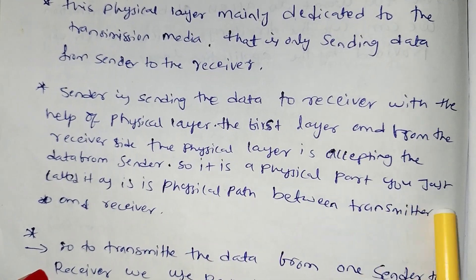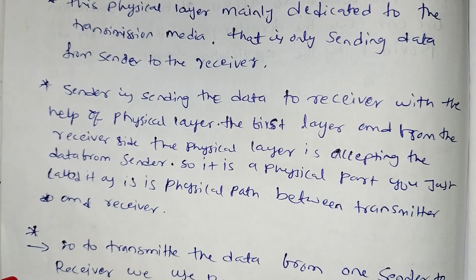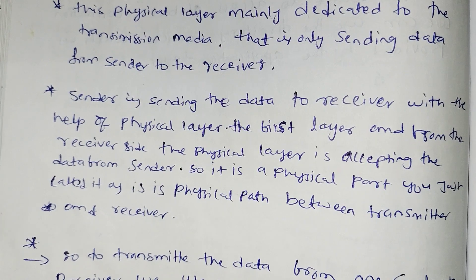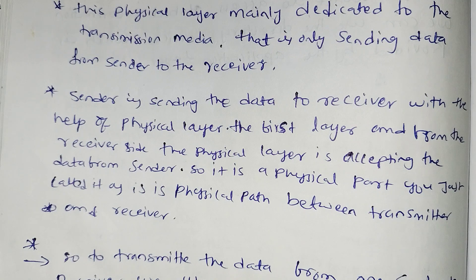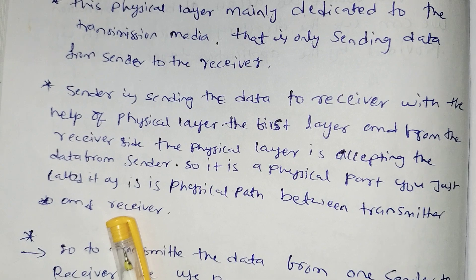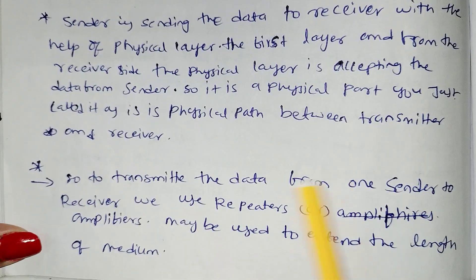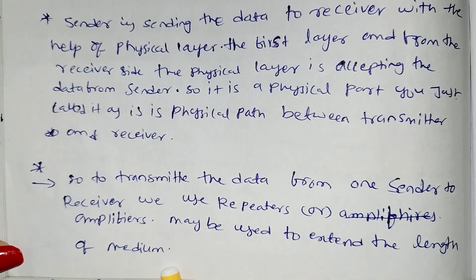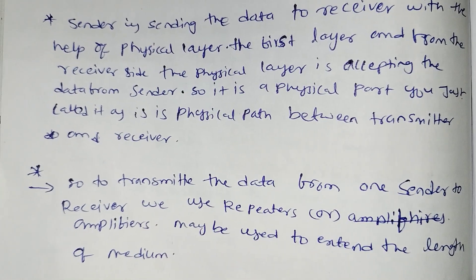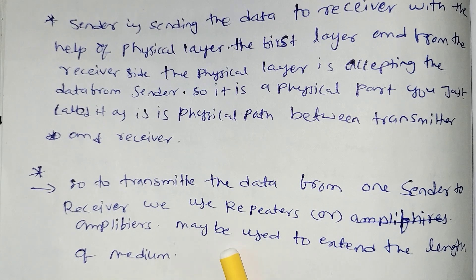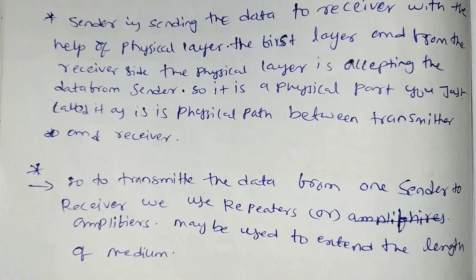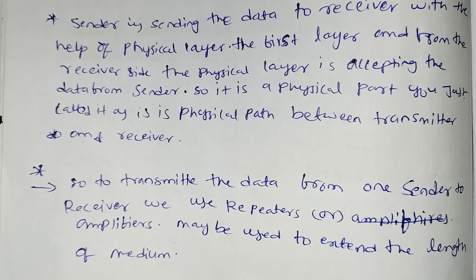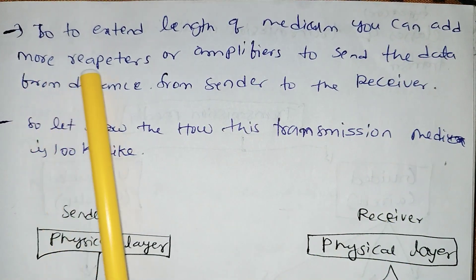So it is a physical path — what is the physical path? The transmitter has a wire connection. To transmit data from one sender to receiver, we use repeaters or amplifiers. These are used to extend the length of the medium. To extend the length, you can add more repeaters and amplifiers.